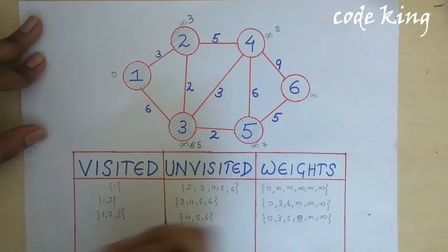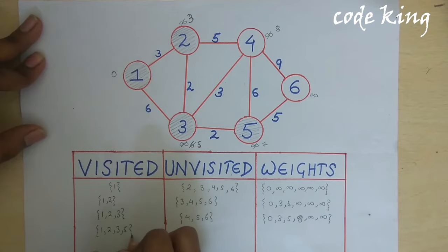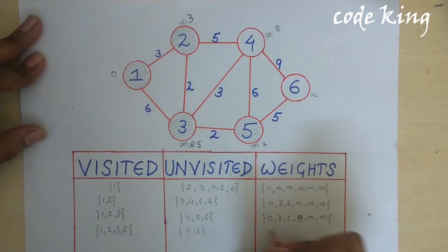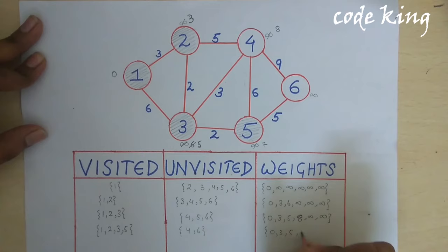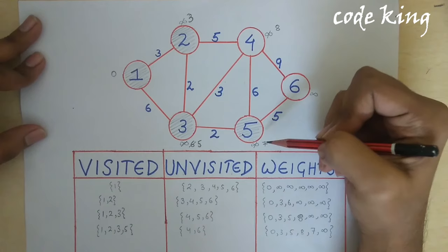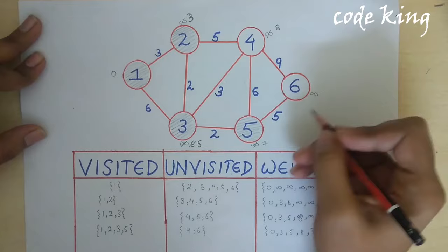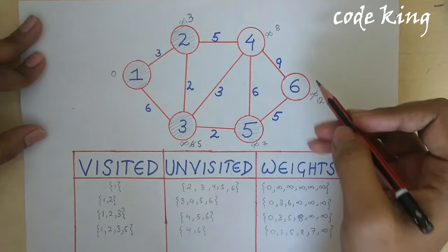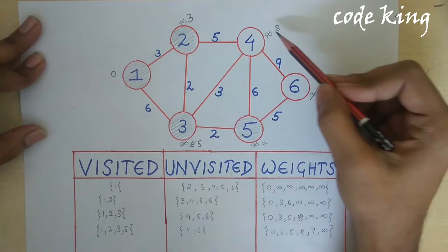We mark node 5 visited. The visited nodes are now 1, 2, 3, 5. The remaining unvisited nodes are 4 and 6, with weights 8 and infinity respectively. The full weight list is: 0, 3, 5, 8, 7, infinity. Exploring node 5's neighbors: 7 plus 6 is 13, which is more than 8, so we do not update. 7 plus 5 is 12, less than infinity, so we update node 6. From the remaining nodes, node 4 has the minimum weight, so we take it into consideration and mark it visited.